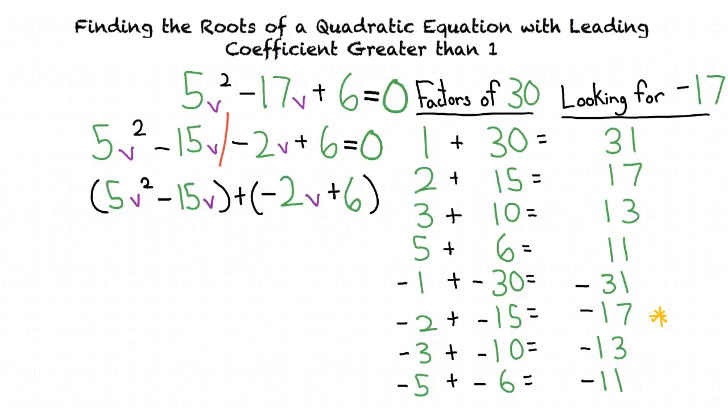We then split the quadratic equation in half and factor the first two linear terms out and the last two linear terms out.